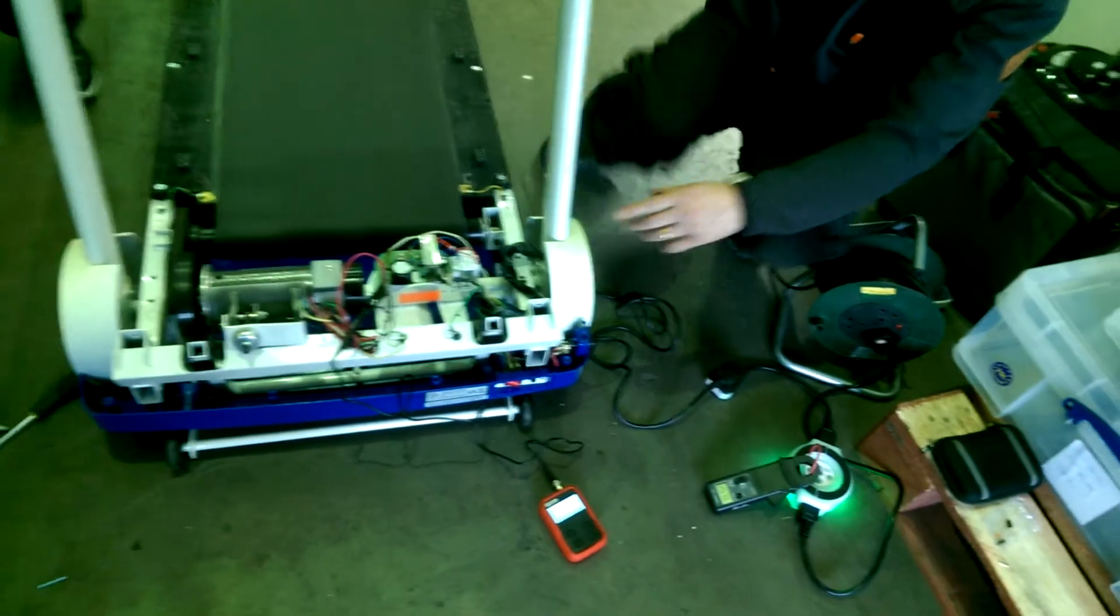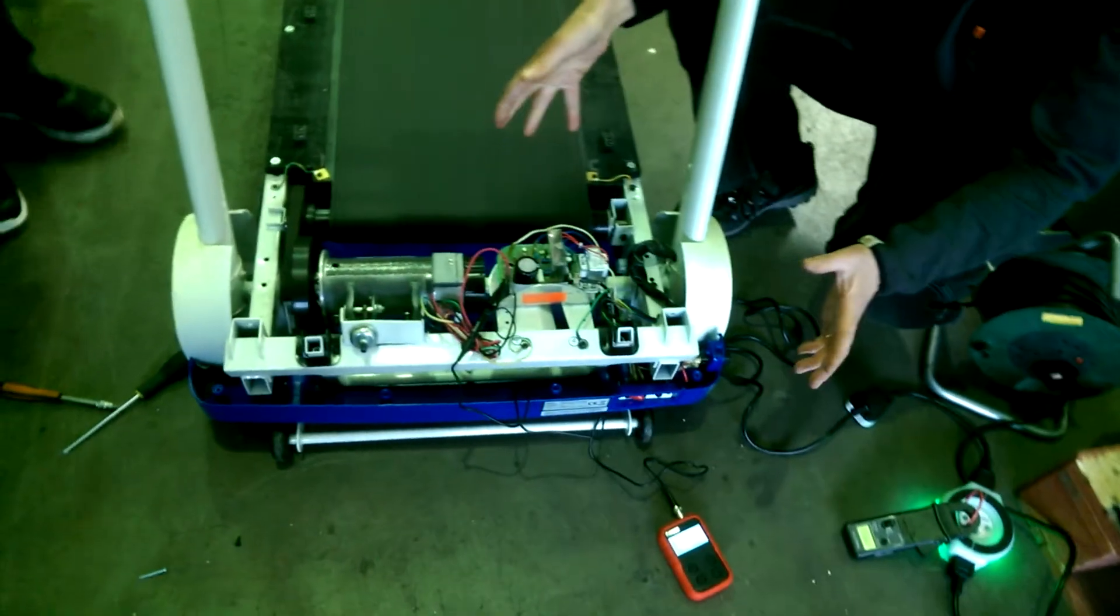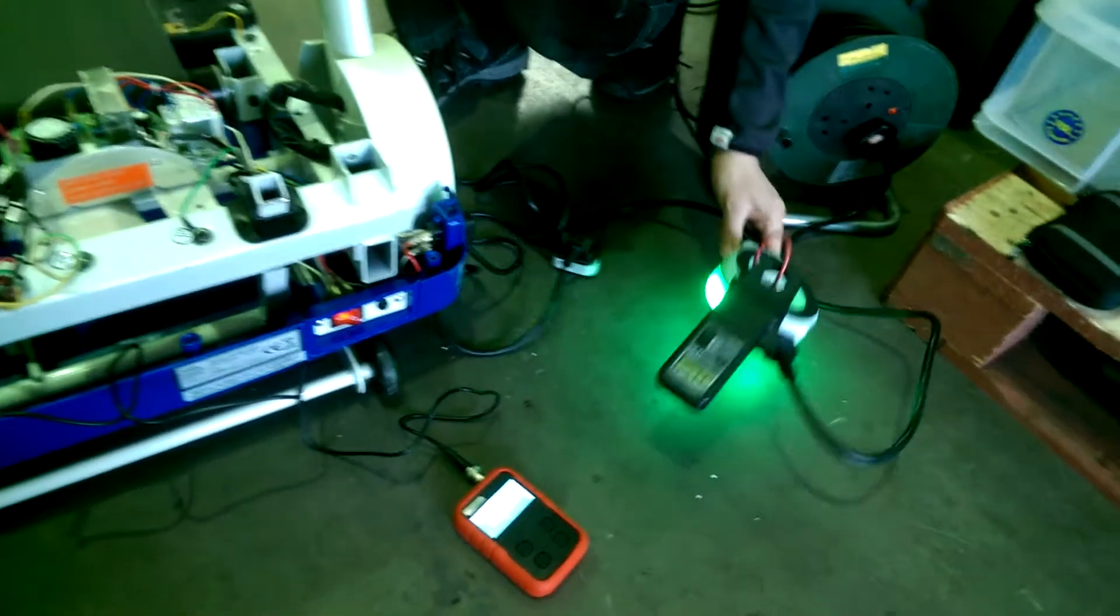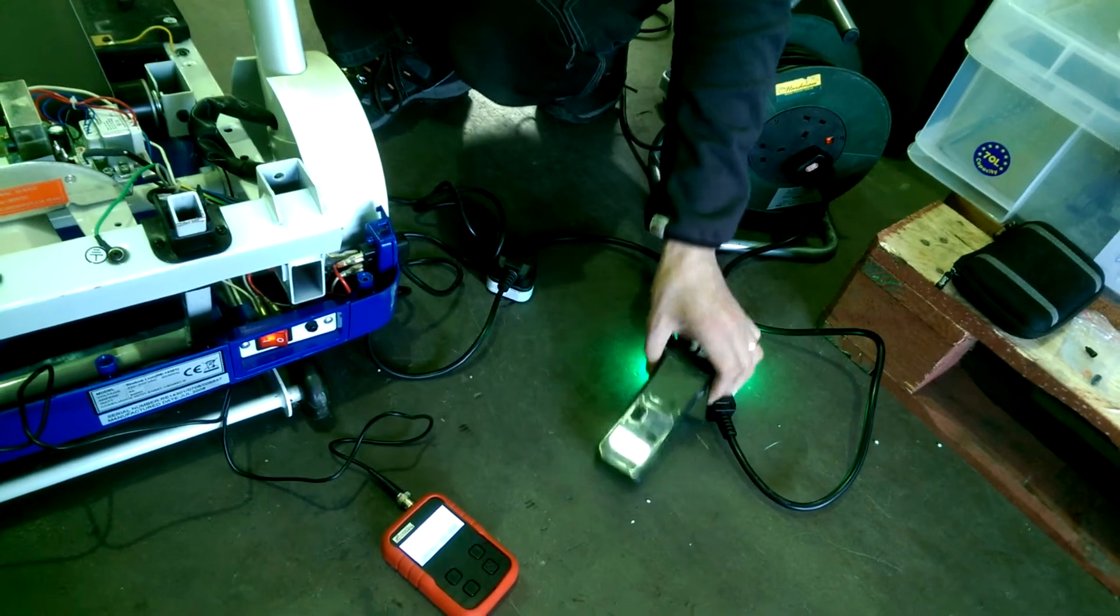Right. We've got here a treadmill which has been wired up to the treadmill saver. That's this thing with the green light. And this is a current clamp.